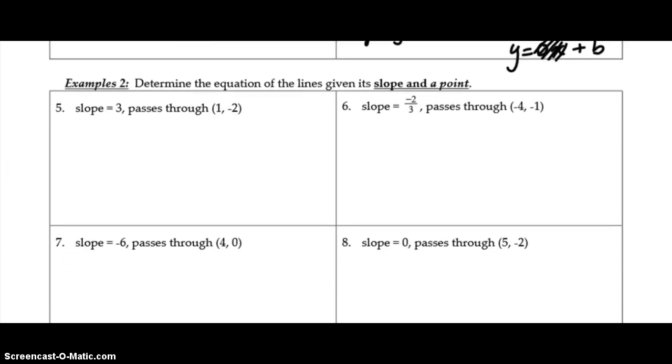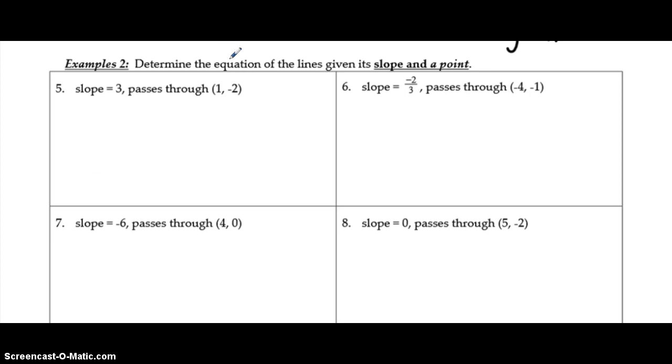All right, so moving along to example set number 2. Determine the equation of the lines given its slope and a point. So we know we have a line with a slope of 3, and it passes through the point (1, -2). What we're missing here is that b value, or our y-intercept. So just like normal, we're going to take y equals mx plus b, substitute our slope in since we know that value.